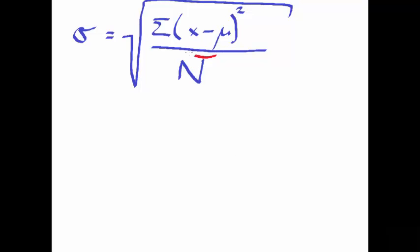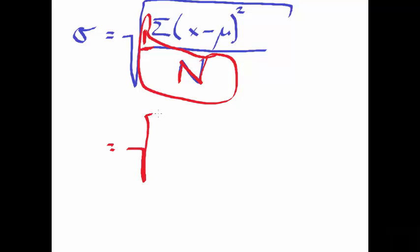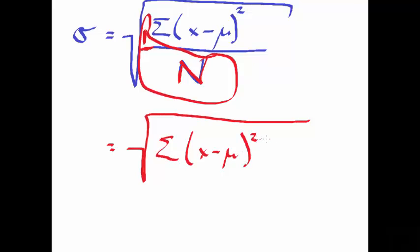Recognize here that dividing by n is really like multiplying by 1 over n. So another way to write this is, if you take that 1 over n inside the summation, this becomes the sum of (x minus mu) squared times 1 over n. Now, if all of the population values are different, this makes a lot of sense. Remember, multiplication is just a shortcut for addition.